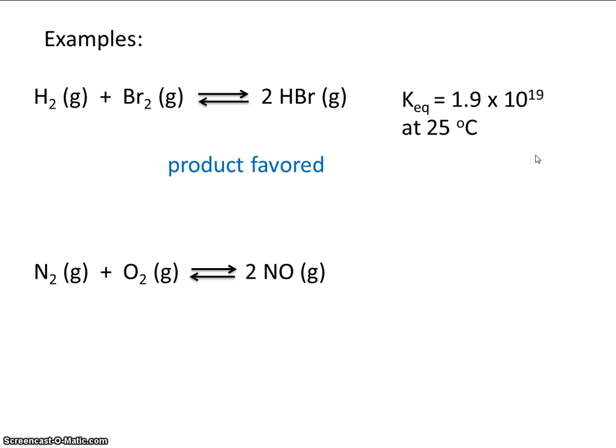Let's look at a second example. Nitrogen gas and oxygen gas. If we mix them together in a flask, to what extent will they make nitrogen monoxide? Well, the equilibrium constant value is 4.1 times 10 to the minus 31. So this is a very, very small number. So a very small number is less than 1. So this reaction would be reactant-favored.